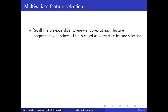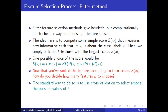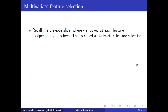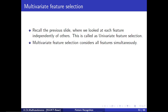Multivariate feature selection: in the previous slide what we have done is univariate feature selection process, where we looked at each feature independently of others. We computed the score S(xi) for each feature independently. One more method is multivariate feature selection, which considers all features simultaneously at once.